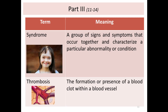A syndrome is a group of signs and symptoms that occur together and characterize a particular abnormality or condition. For example, Down syndrome presents with upward-slanting eyes, a flat nose, protruding tongue, mental retardation, and other features. This collection of signs and symptoms together in a patient indicates a certain syndrome.